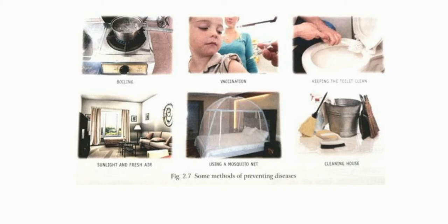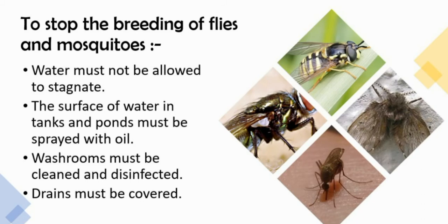Using mosquito nets and cleaning the house properly are also important prevention methods. To stop breeding of flies and mosquitoes, water must not be allowed to stagnate - meaning it must not collect in one place. The surface of water in tanks and ponds must be sprayed with oil, washrooms must be disinfected, and drains must be covered.